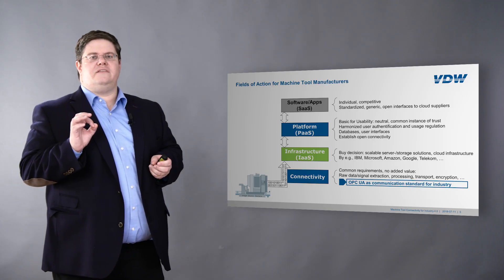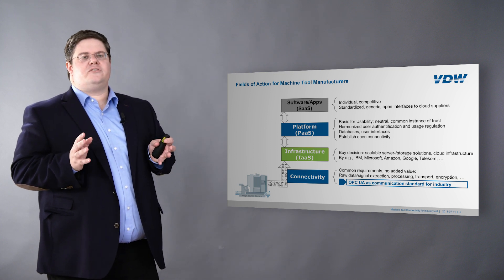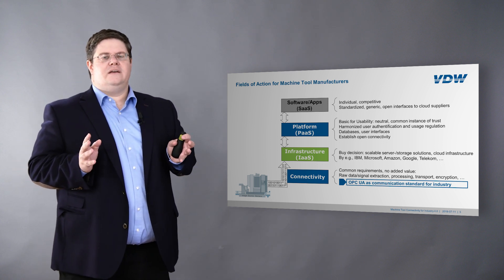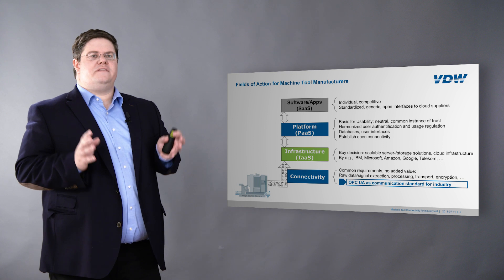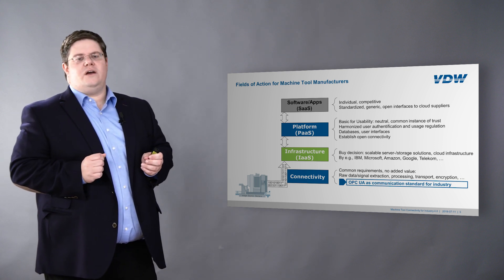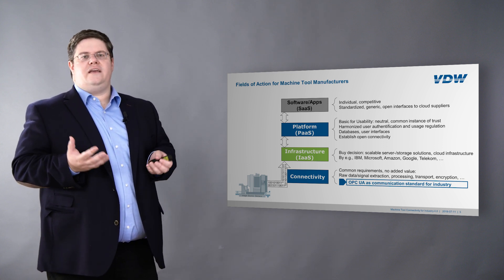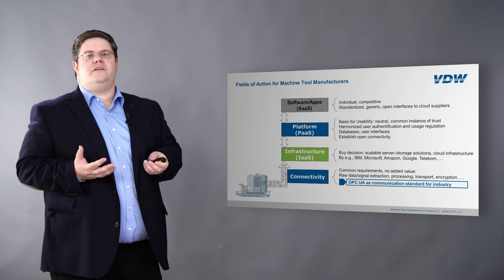Infrastructure is clearly a buy decision. Nobody will want to invest in data storage systems, telephone lines, or Wi-Fi networks — we have expert companies as partners that will provide the infrastructure we need. But the first level, basic connectivity, is a field where open connectivity will be mandatory to remain in business. This is no field for distinguishing between individual solutions, but a field for close collaboration. This is where we team up with our companies, and why we use OPC UA as the open communication standard for industry to provide open accessibility.